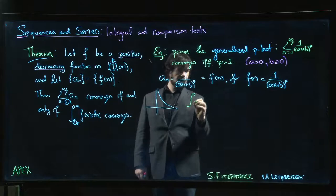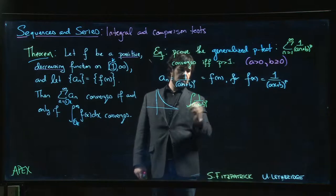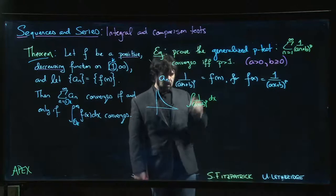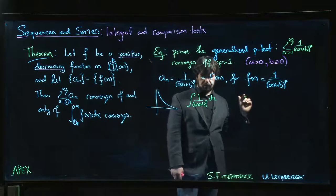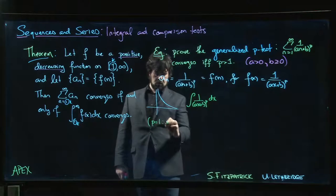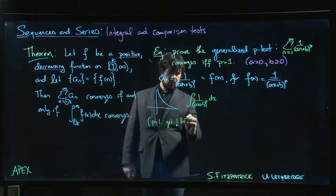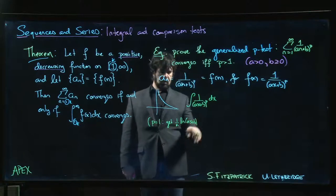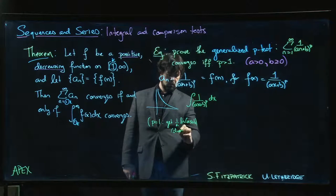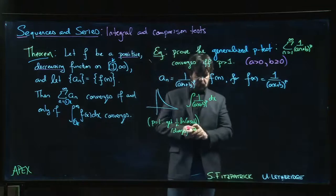Let's do the indefinite integral first: 1 over (ax + b) to the power of p, integrated with respect to x. Now we know that if p is equal to one, well then we get this is going to give me 1 over a times the natural log of (ax + b), and we know that as x goes to infinity, that's going to blow up on us. So we know it diverges if p is equal to one.